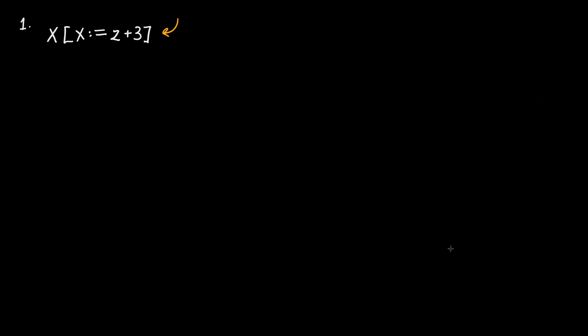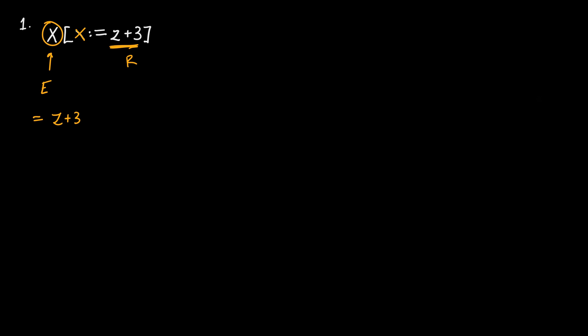In the first standalone example, we have expression E which is simply X, and we're going to replace all occurrences of X with Z plus 3. Here, X is the variable to replace, Z plus 3 is R, and our original expression E is just X. We perform this substitution in one line: since the entire expression is just one occurrence of X, our final result is Z plus 3.